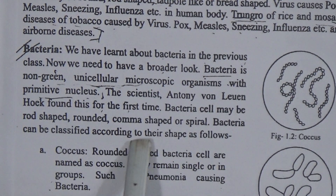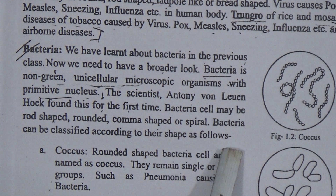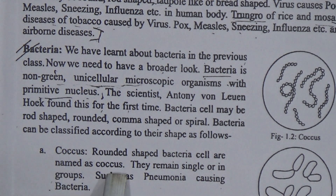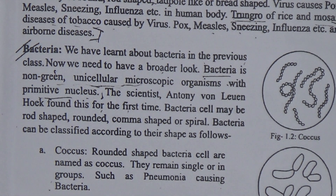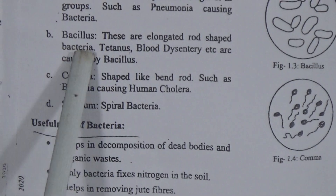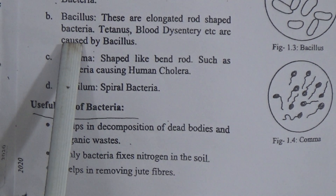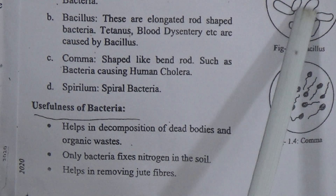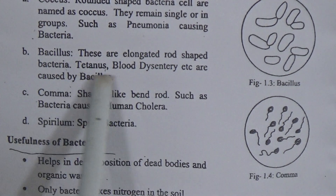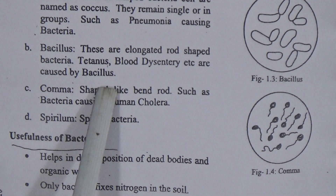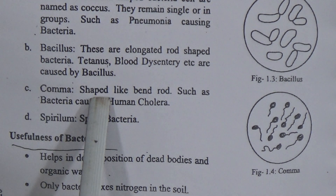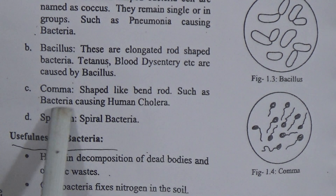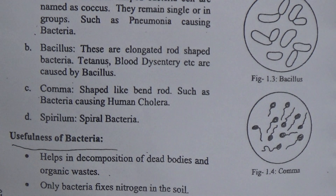Bacteria can be classified according to their shape as follows. Cocci: they are round-shaped and found singly or in groups, such as pneumonia-causing bacteria. Bacillus: these are elongated rod-shaped bacteria — tuberculosis and diphtheria etc. are caused by bacillus. Comma-shaped: shaped like a curved rod, such as the bacteria causing cholera. Spirula: spiral-shaped bacteria.